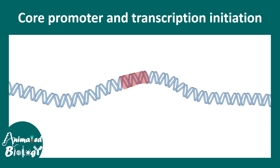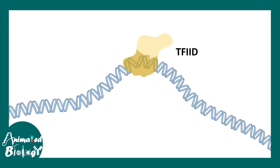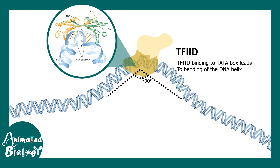The TATA box core promoter is really important for TF2D to bind. TF2D has the TATA box binding protein (TBP) as a subunit, which binds to the DNA, and TAFs (TATA box binding protein-associated factors) serve as a transcription activation domain that interacts with other molecules. TF2D can distort the DNA architecture, creating an almost 90-degree bend, and interacts with the DNA via a beta-pleated sheet.